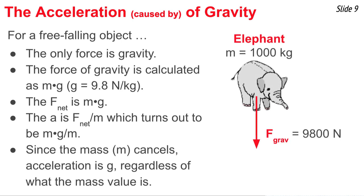If you put numbers in for the elephant, this is kind of a small-sized elephant, 1,000 kilograms, you end up with a gravity force of 9,800 newtons. And then you divide that by 1,000 kilograms, and you end up with 9.8 newtons per kilogram, or 9.8 meters per second per second.